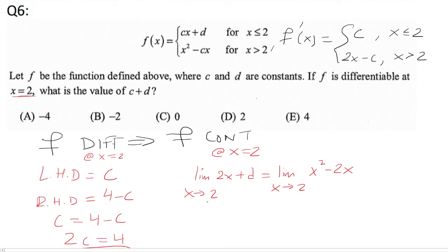Okay, now we're going to plug in x equals 2 to get 4 plus d. It's 2 squared, which is 4, minus 2 times 2 is 4, that's 0. So d has to be negative 4.